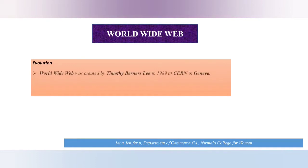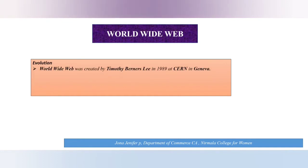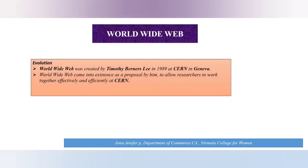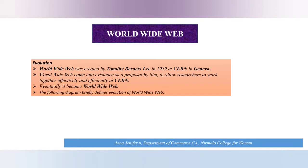Regarding the evolution, the World Wide Web was created by Timothy Berners-Lee in the year 1989 at CERN in Geneva. It came into existence as a proposal by him for researchers to work effectively and efficiently at CERN, and finally it became the World Wide Web. The following diagram briefly defines the evolution of the World Wide Web.